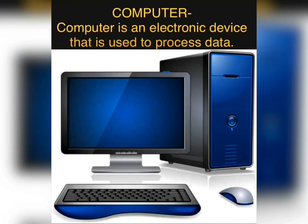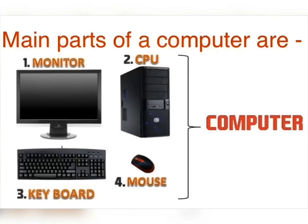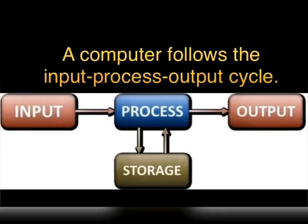Children, tell me what is a computer? Computer is an electronic device that is used to process data. The main parts of a computer are monitor, CPU, keyboard and mouse. A computer follows the input, process and output cycle. It is also called the IPO cycle.